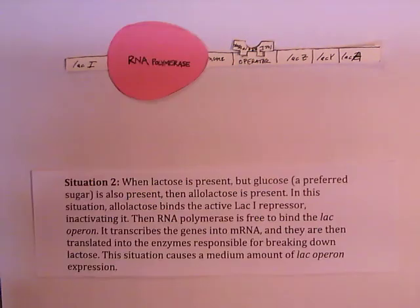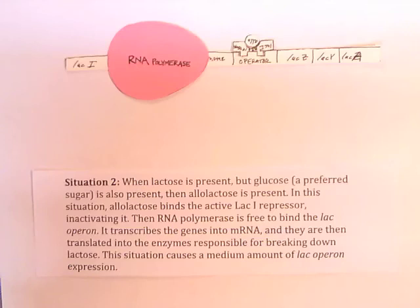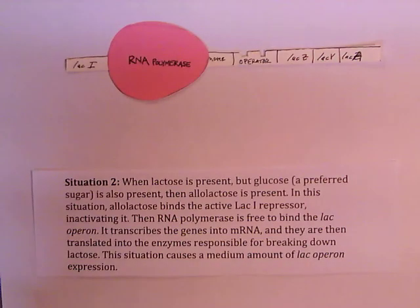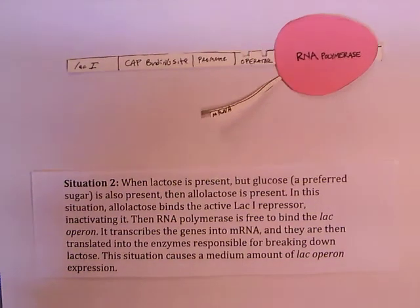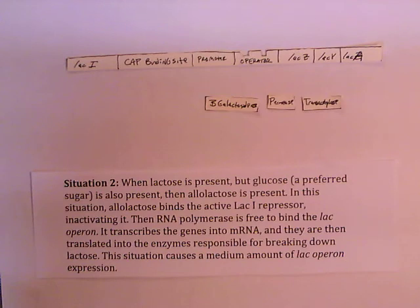Situation 2: When lactose is present, but glucose, which is a preferred sugar, is also present, then allolactose is present. In this situation, allolactose binds the active lacI repressor, inactivating it. RNA polymerase is then free to bind the lac operon. It transcribes the genes into mRNA, and they are translated into the enzymes responsible for breaking down lactose. This situation causes a medium amount of lac operon expression.